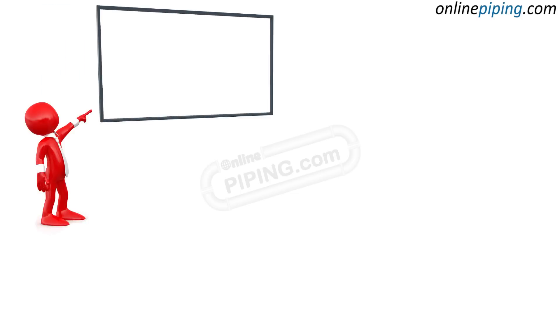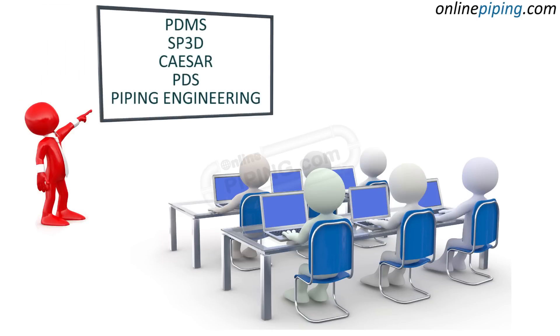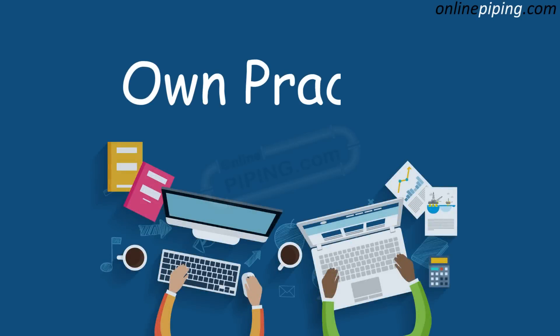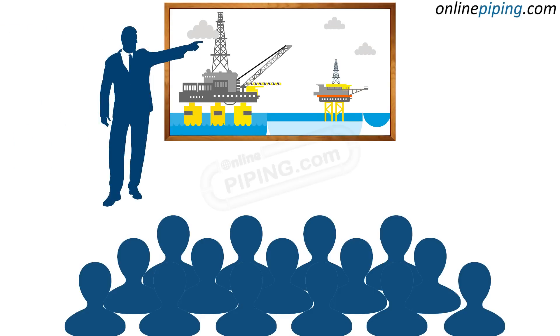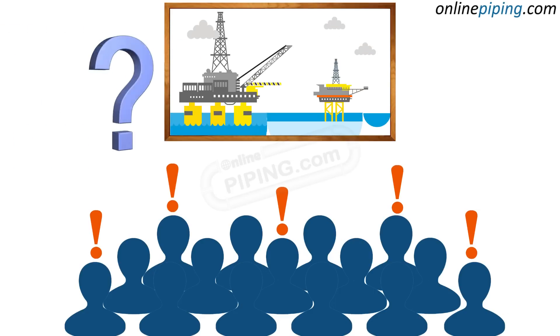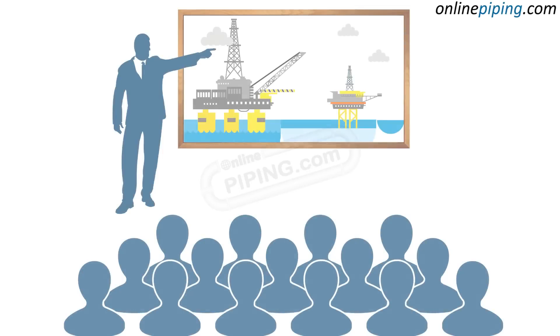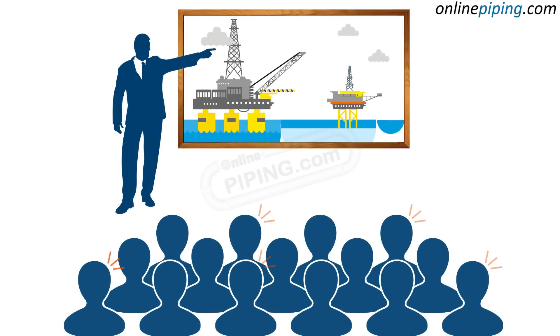In a live classroom, you get to meet all your trainers and co-participants. You can get clarification on technical doubts or subject doubts. There is real, practical, and hands-on use of the tools and technical commands. However, in classroom training, sometimes we have to face the absence of faculty as well as co-participants.